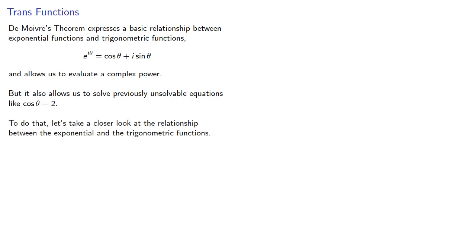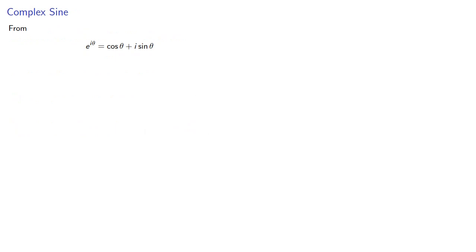To understand this, let's take a closer look at the relationship between exponential and trigonometric functions. Starting from e to the i theta equals cis theta, let's find e to the negative i theta.